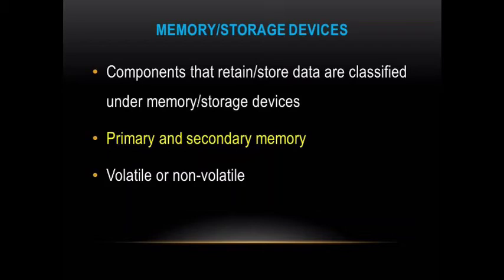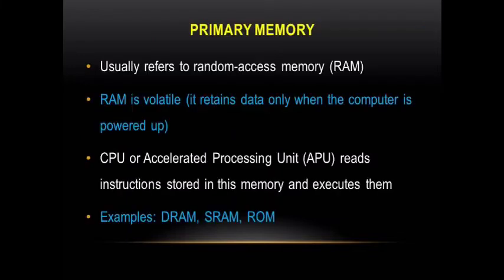Components that retain or store data are classified under memory or storage devices. Storage is subdivided into primary and secondary memory and is either volatile or non-volatile. Primary memory usually refers to Random Access Memory or RAM, but can also refer to all memory that works in tandem with the processor. RAM is volatile, meaning that it retains data only when the computer is powered up. The CPU or accelerated processing unit APU reads instructions stored in this memory and executes them as required.